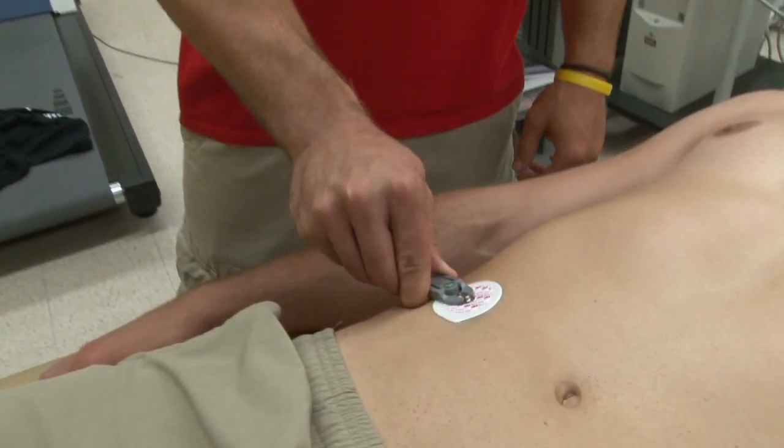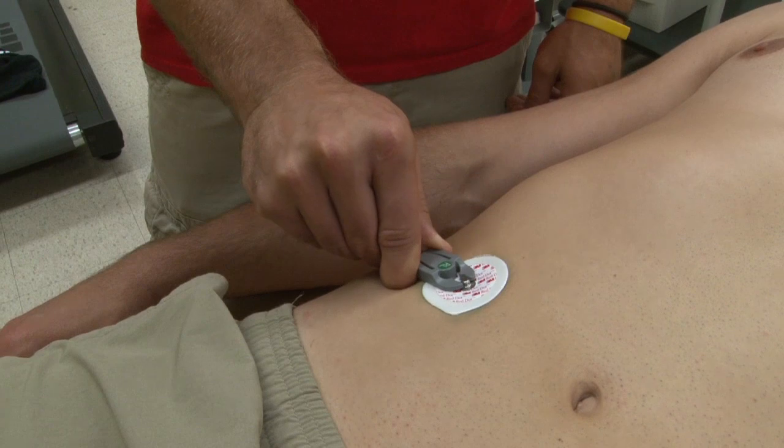Now that we have all the electrodes placed, next we're going to apply the wires to each electrode. Each wire is labeled to what site you applied to. So this one says right leg, so we're going to apply it there. Just a note, this is the ground lead in the ECG.